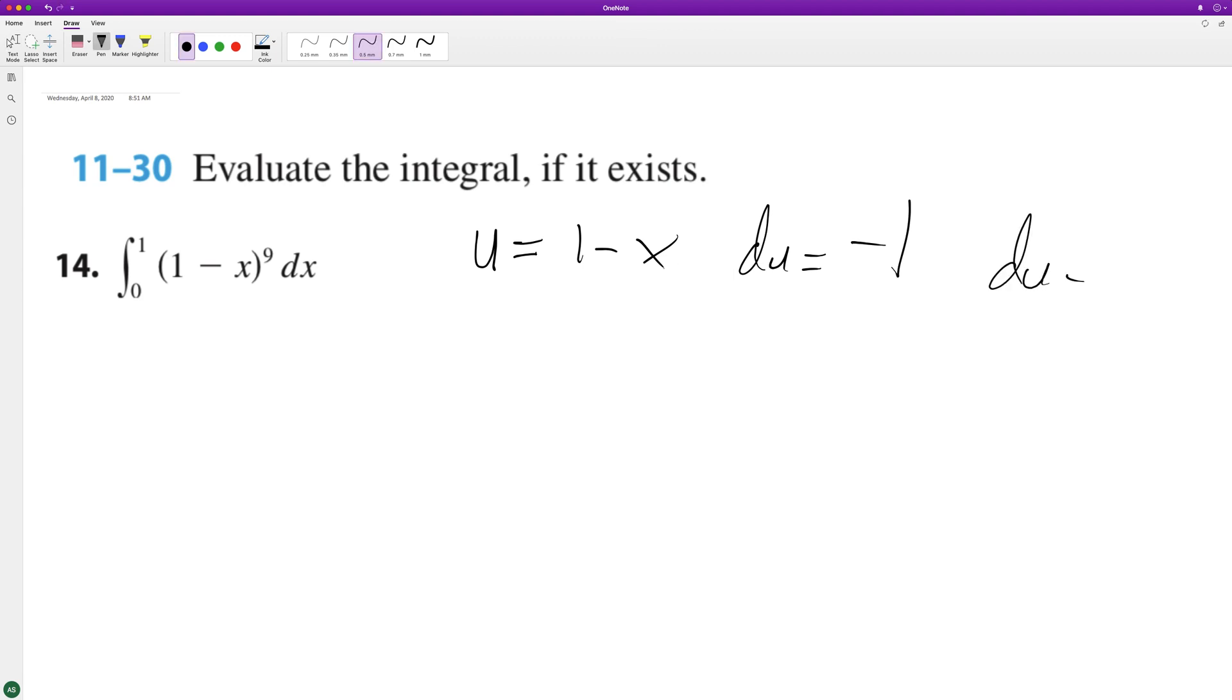So to get dU equal to dx, we need to multiply dU by negative one. So we have a negative on the outside here when we integrate this from zero to one, U raised to the ninth dU.